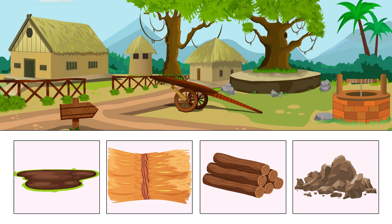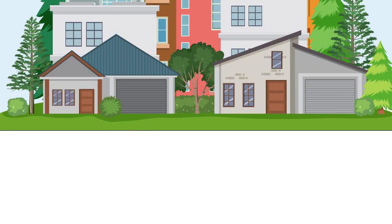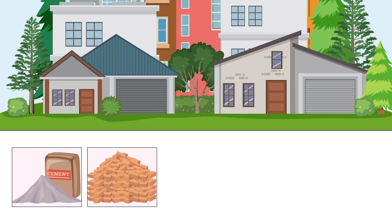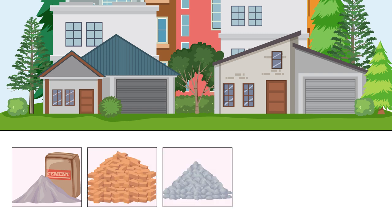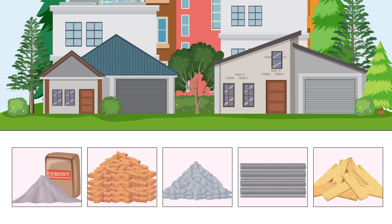Most of these are natural materials which we can easily find around us. Kaccha houses take little time to be made. This is a Pakka house. They are made of cement, bricks, stones, iron and wood. Generally, Pakka houses are strong compared to Kaccha houses.